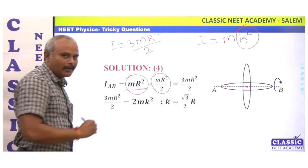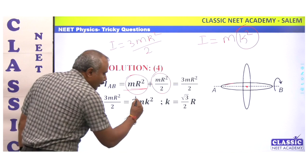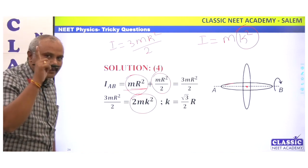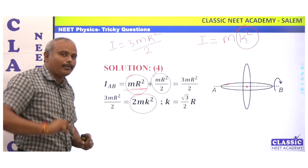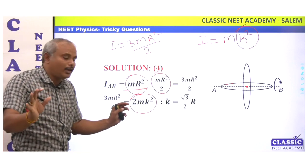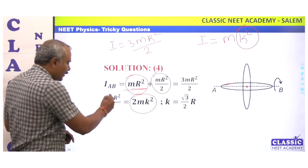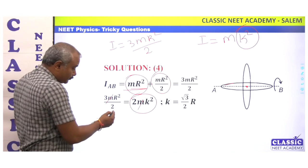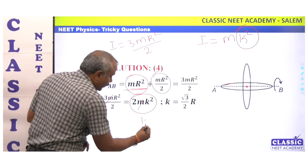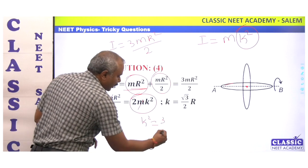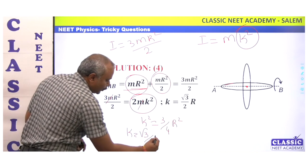This is the trick, because I equals mk². For two masses it is 2m × k². So 2m × k² must equal three mr²/2. The m's cancel, and k² equals three r²/4. So k equals √3/2 × r.